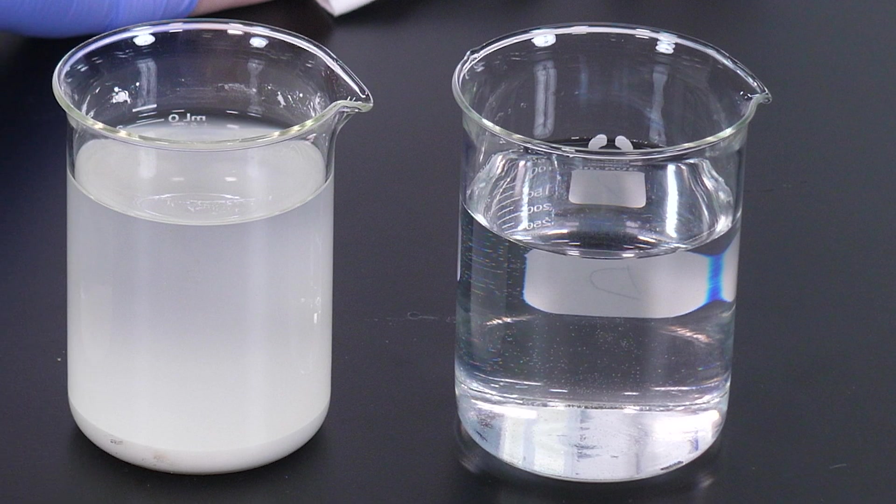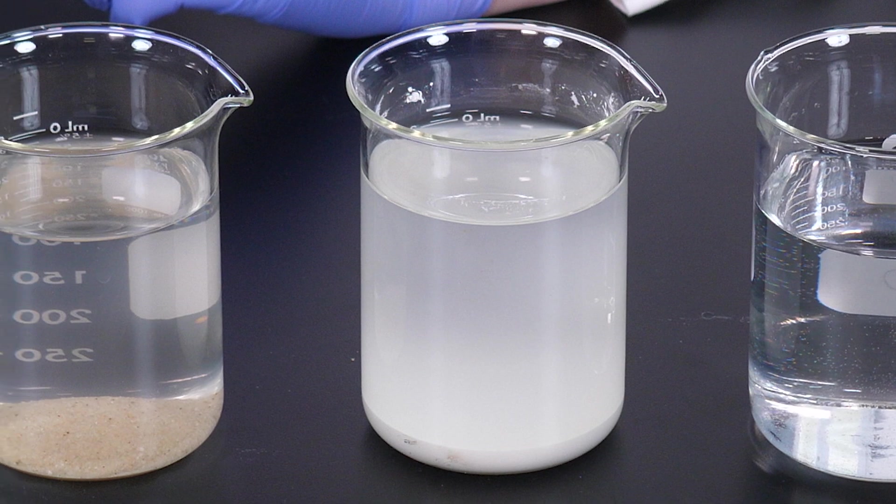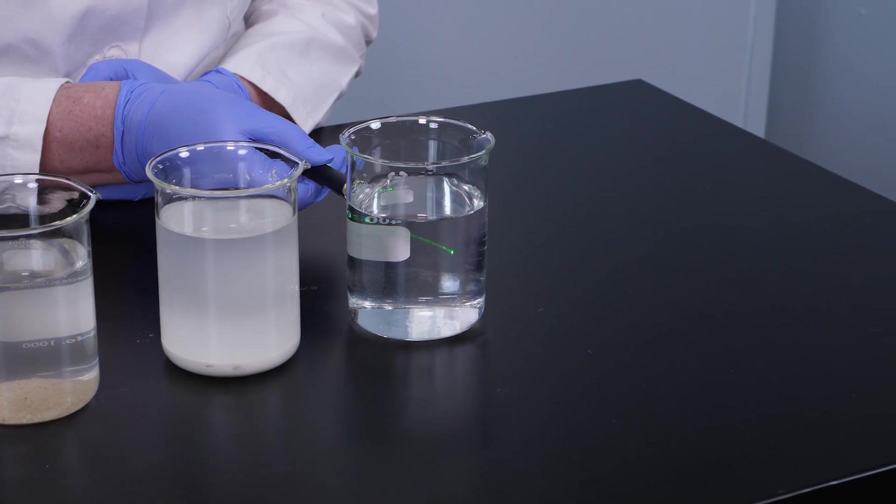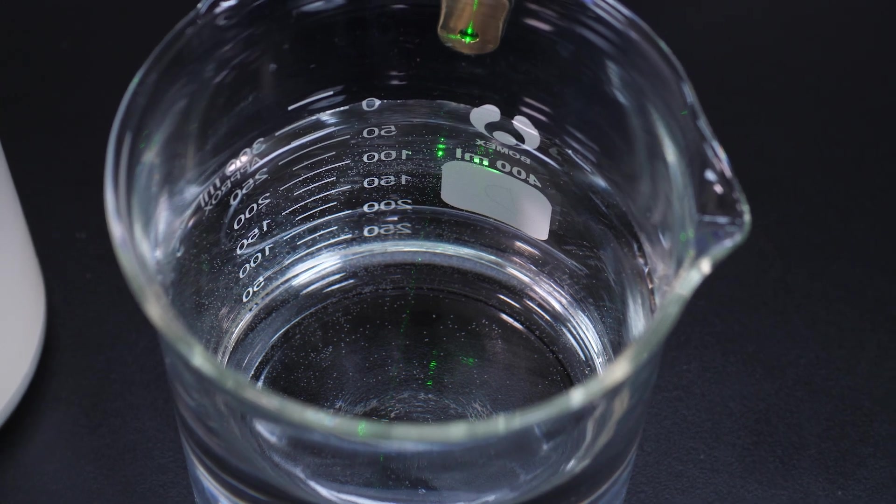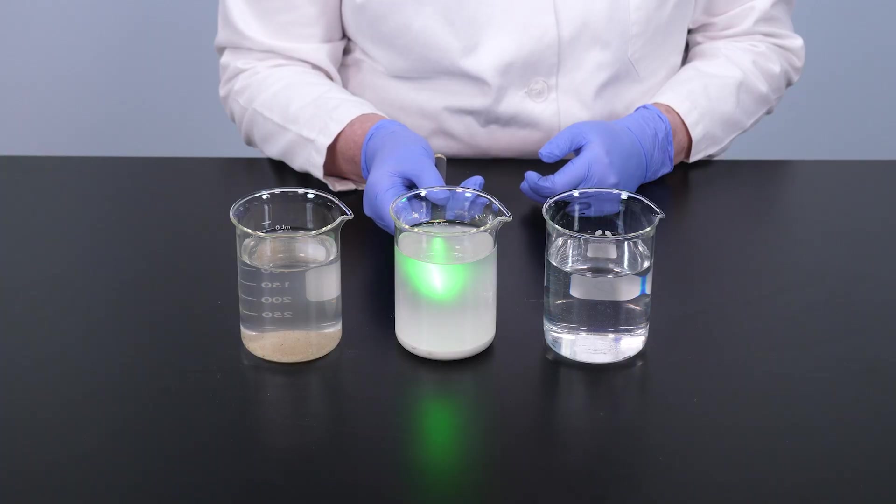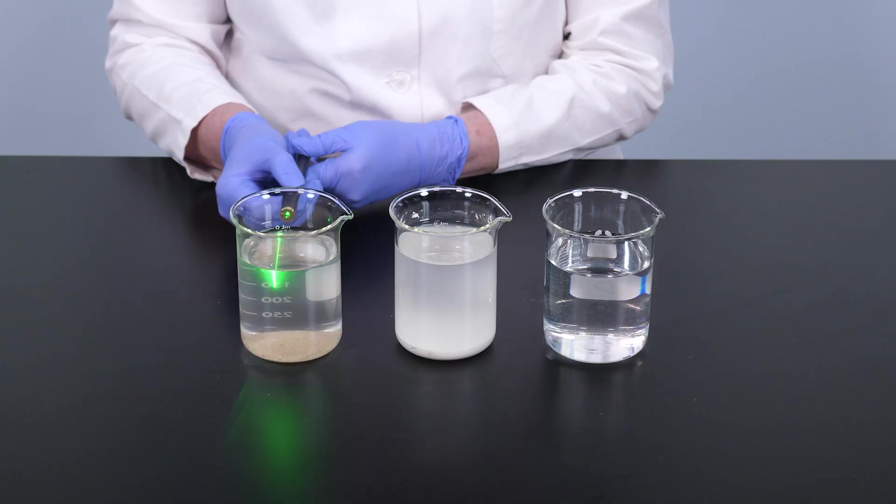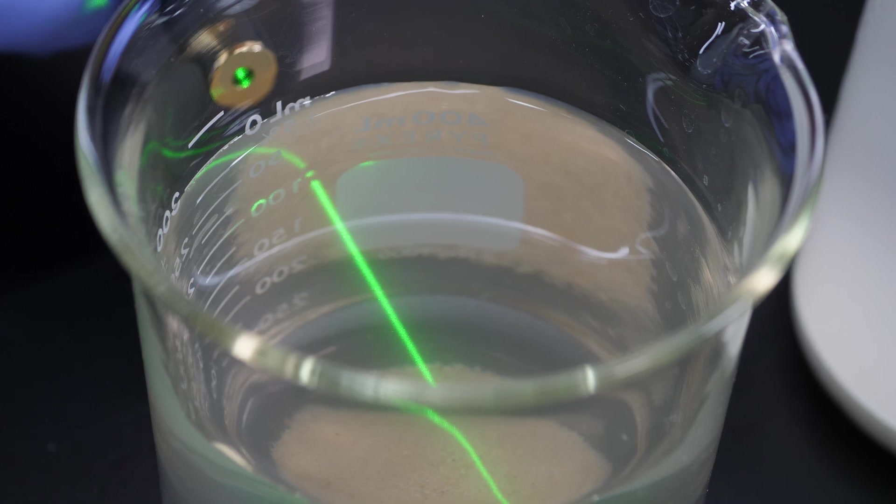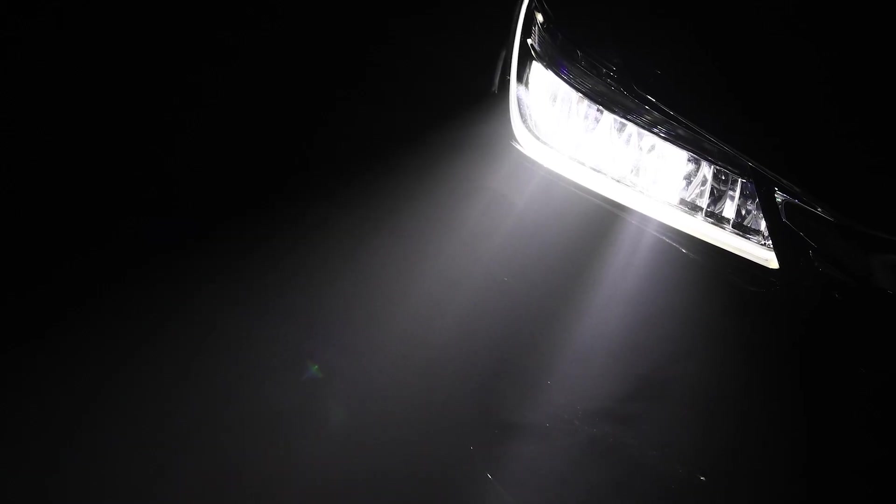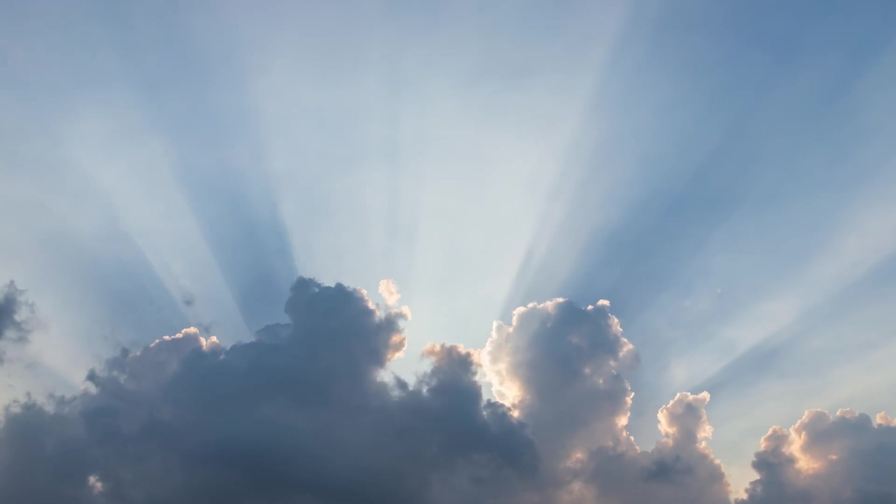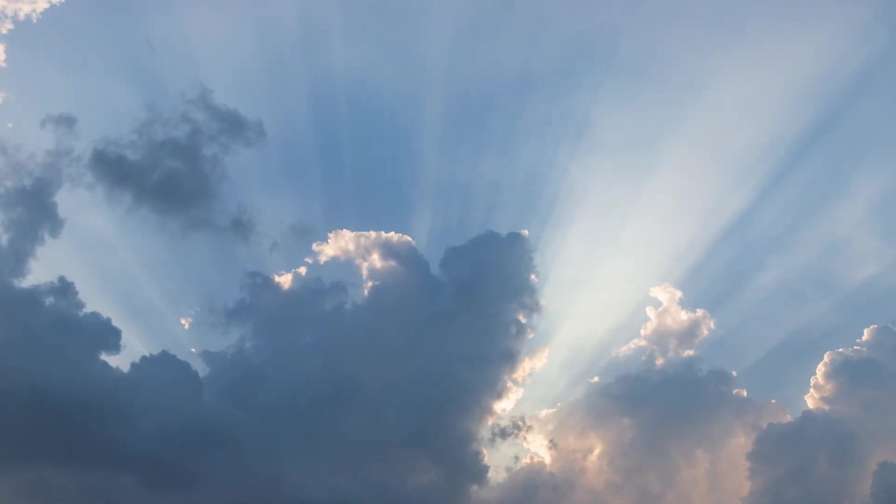Look what happens when we shine the light through each of the three mixtures. The light passes through the solution largely unaffected and unseen because there are no particles to deflect it. However, we can clearly see the beam of light in the colloid and the suspension. This is because the particles in these mixtures deflect the light and make the beam visible. You may have seen the same phenomenon with the headlights of an automobile on a foggy night. The light from the headlights is scattered by the colloidal particles of water in the air, or perhaps you have seen the rays of sunlight as they pass through the colloidal particles in the clouds.